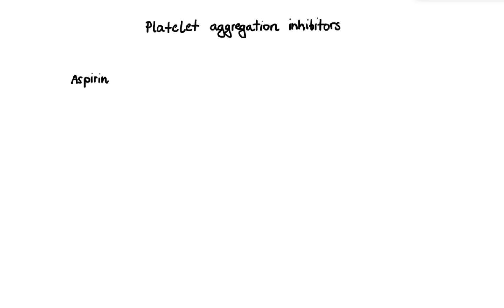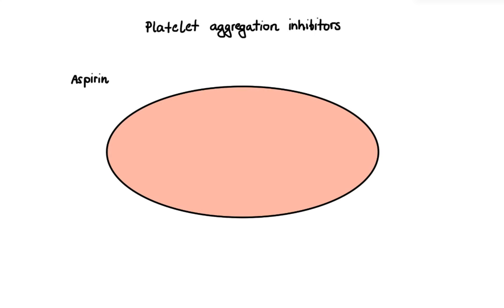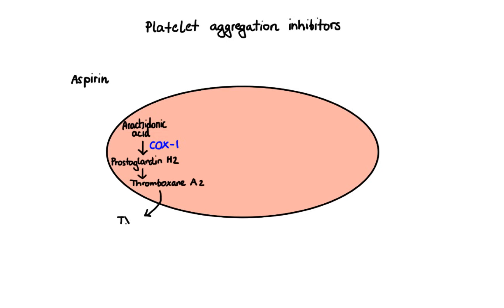One of the most widely known drugs that belongs to this class is aspirin. When a platelet becomes activated, arachidonic acid is released from the membrane phospholipids. It gets converted to prostaglandin H2 by cyclooxygenase-1 enzyme, also known as COX-1. Finally, prostaglandin H2 is further metabolized to thromboxane A2, which is released from the platelet to stimulate activation of new platelets and promote their aggregation. Aspirin irreversibly inactivates the COX-1 enzyme, thus effectively disrupting clot formation.